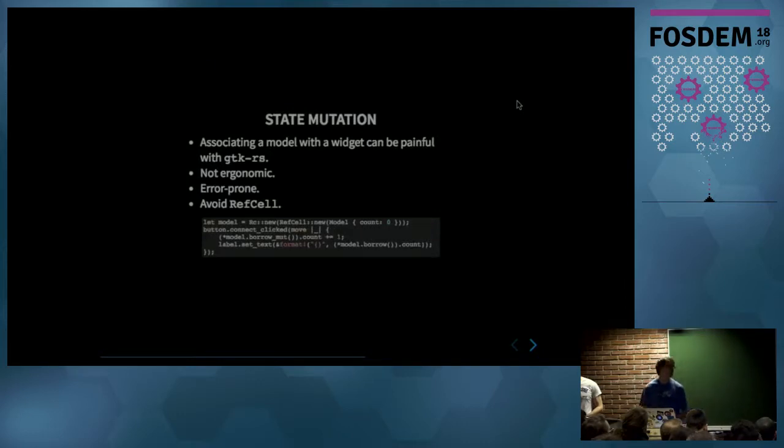So the first problem I had is when you want to associate some data with a widget, let's say the model of your application. When you want to do that with GTK-RS, because of the safety we have in Rust, we need to use an RC RefCell. So we have a ref counted value that we want to check to be able to borrow at runtime.